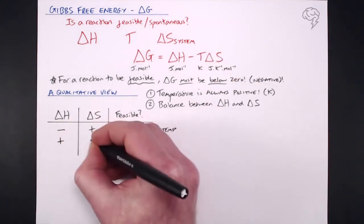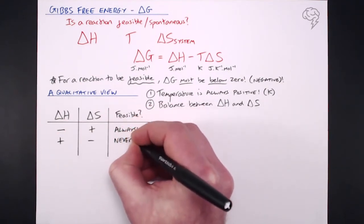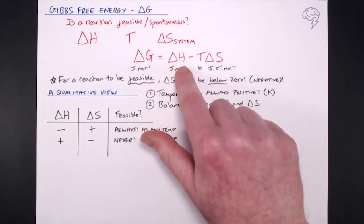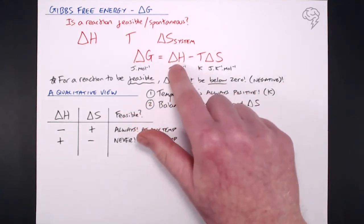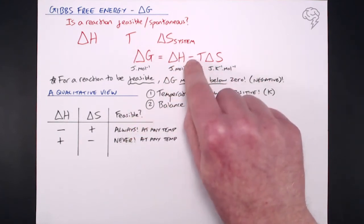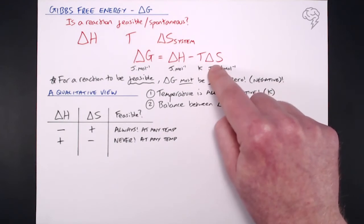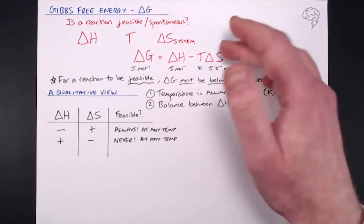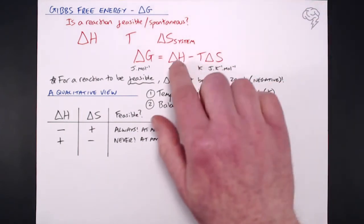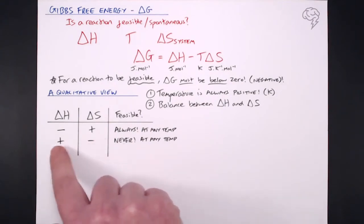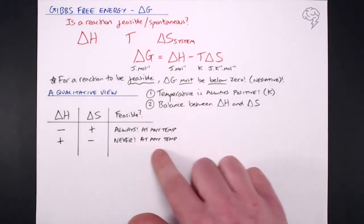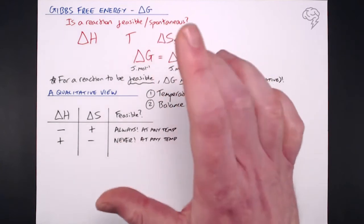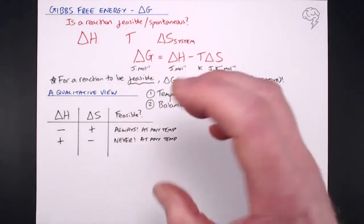If we've got a positive delta H and a negative delta S, we're never going to get a feasible reaction. If we start with a positive delta H and take away a negative delta S, it's only going to get more positive. So with this combination, the reaction is never feasible at any temperature — delta G is always going to be positive.